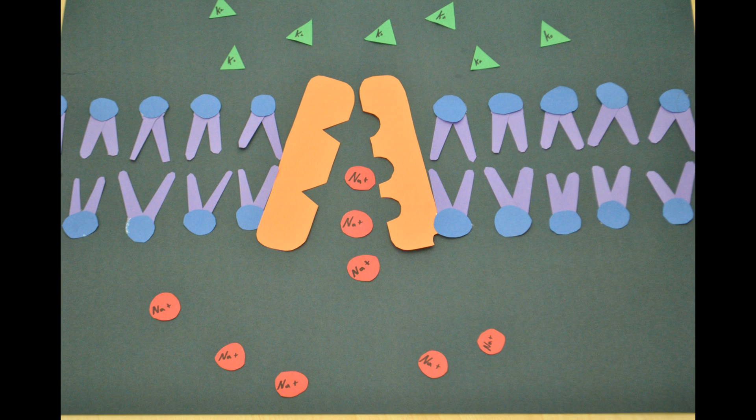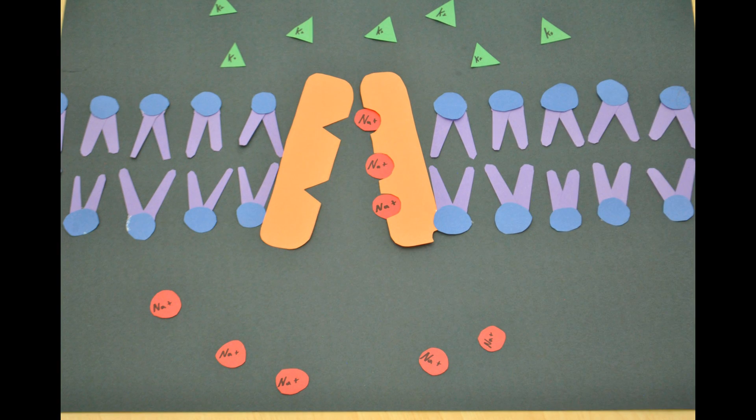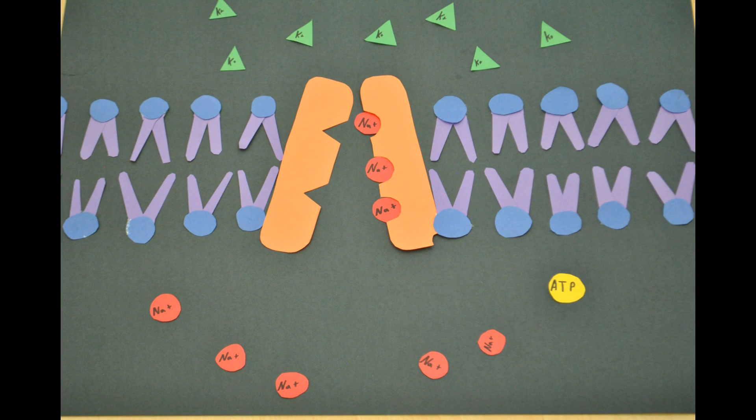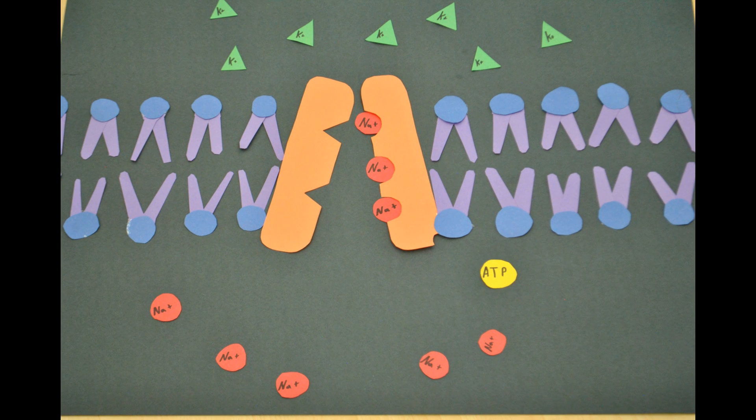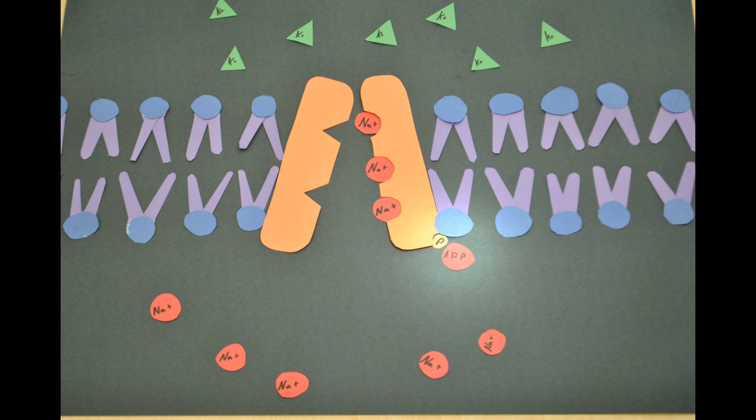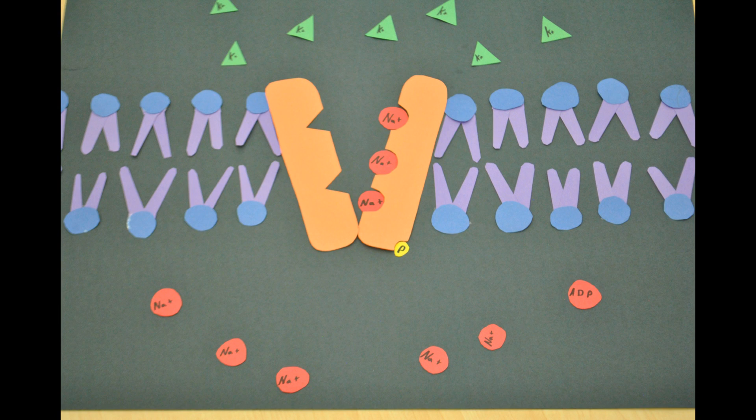First, three sodium ions enter the protein and bind to its specific spots. Next, a molecule of ATP breaks down into ADP and phosphate. The lone phosphate atom binds to the protein, causing it to change shape and release the sodium ions to the outside of the cell.